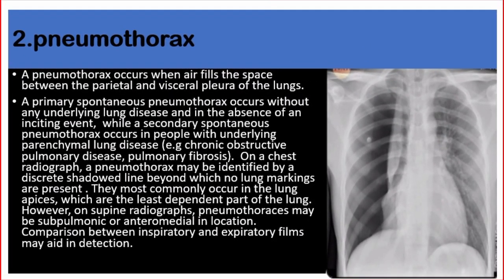Number two: pneumothorax. A pneumothorax occurs when air fills the space between the parietal and visceral pleura of the lungs. A primary spontaneous pneumothorax occurs without any underlying lung disease and in the absence of an inciting event, while a secondary spontaneous pneumothorax occurs in people with underlying parenchymal lung disease — for example, chronic obstructive pulmonary disease or pulmonary fibrosis.